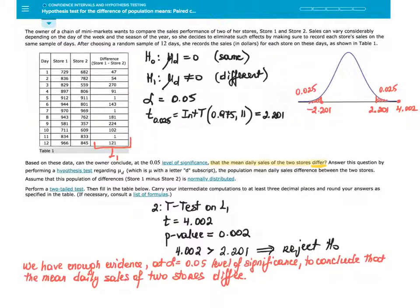Therefore, I conclude that we have enough evidence at alpha equals 0.05 level of significance to conclude that the mean daily sales of two stores differ.